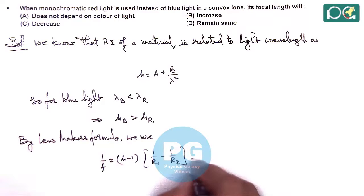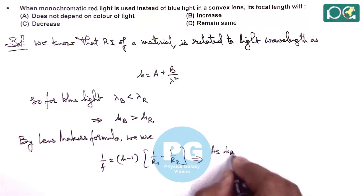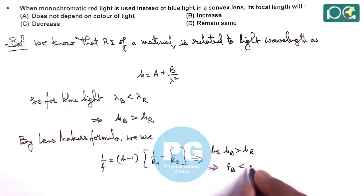In this situation, as we know μ_blue > μ_red, we can directly write: if μ is more, 1/f will be more. Therefore, f_blue < f_red.